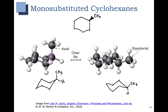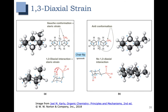So that means this carbon here is that carbon there, which becomes this carbon here in the chair flip, which is that carbon there in my drawing. Of these two chair conformations, the one on the right here is lower in energy or favored. Let's see why that is. On the left here, we see the situation where the methyl group is in the axial position. If you look at the side-on view in the Newman projection here, you can see that what we have is a gauche interaction.